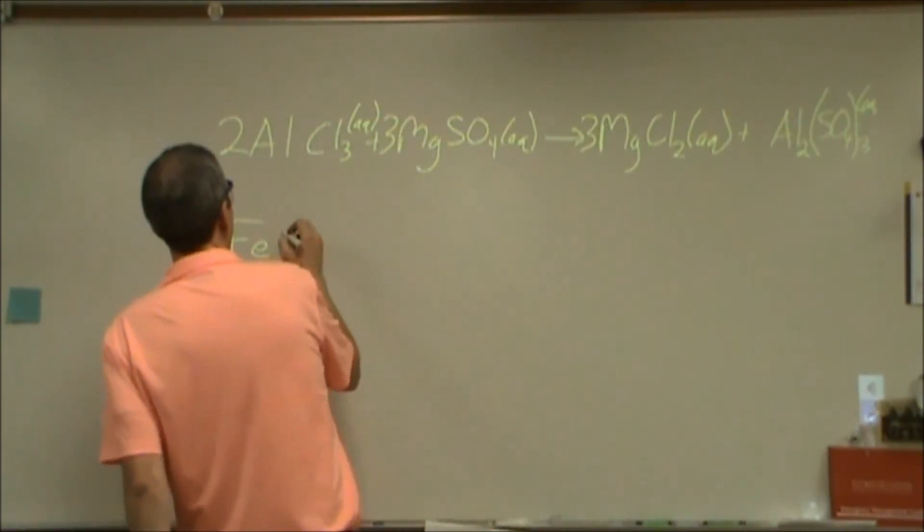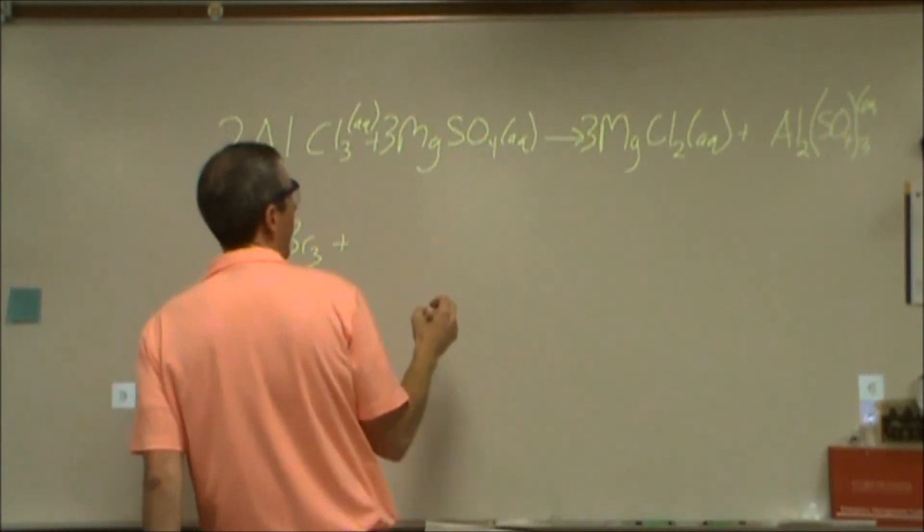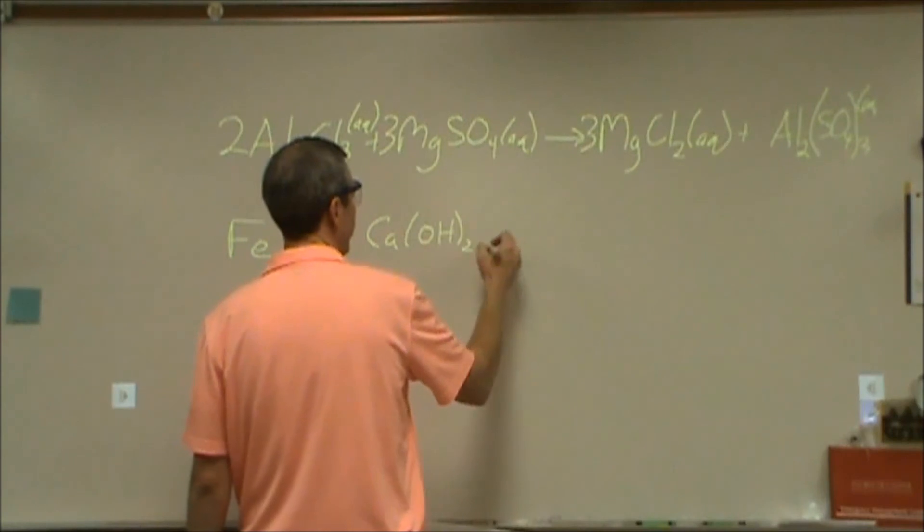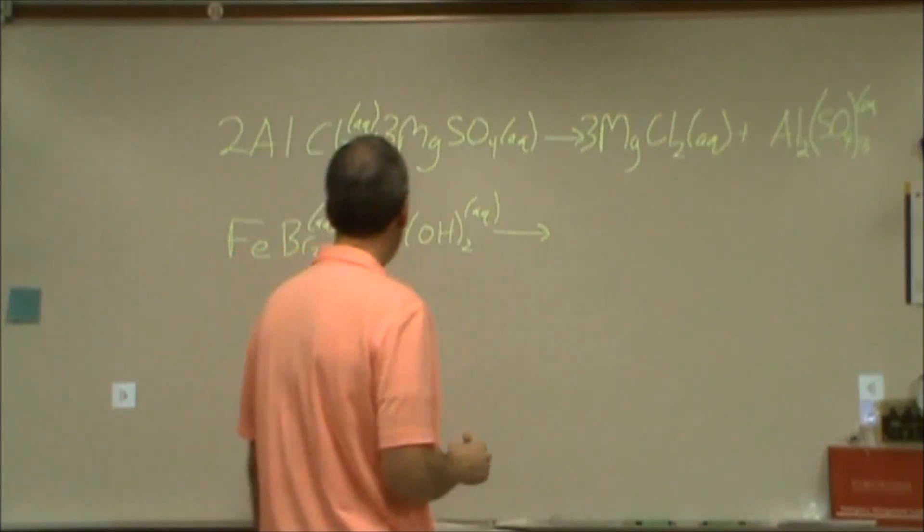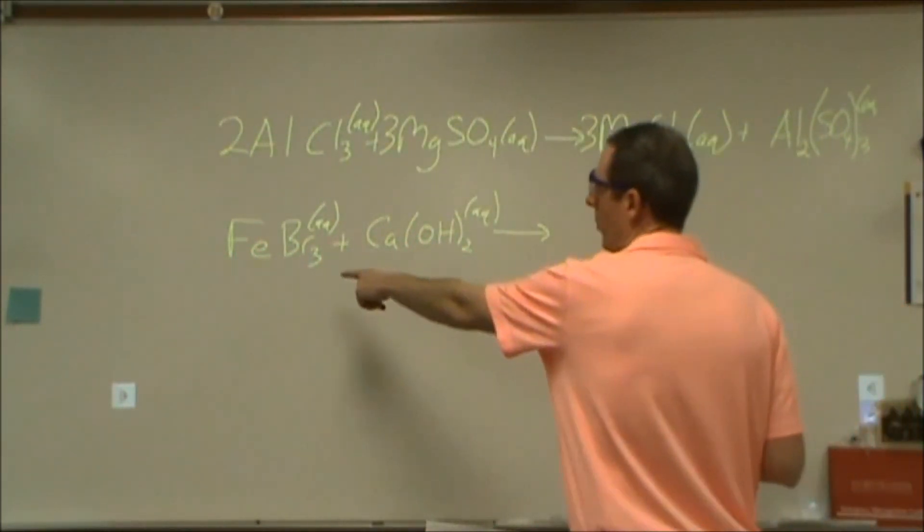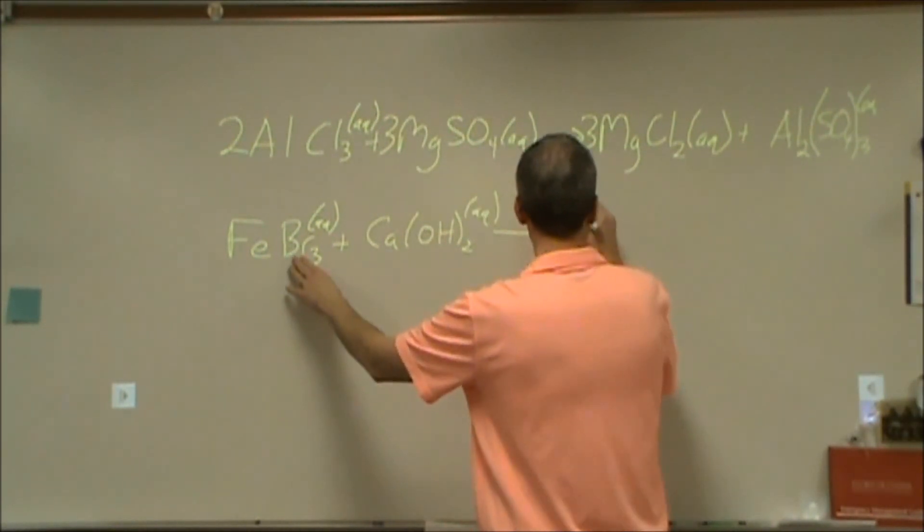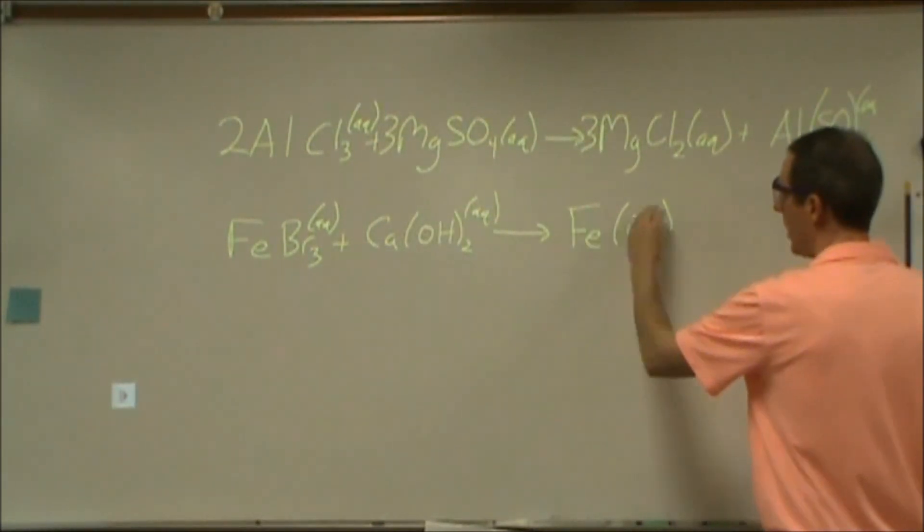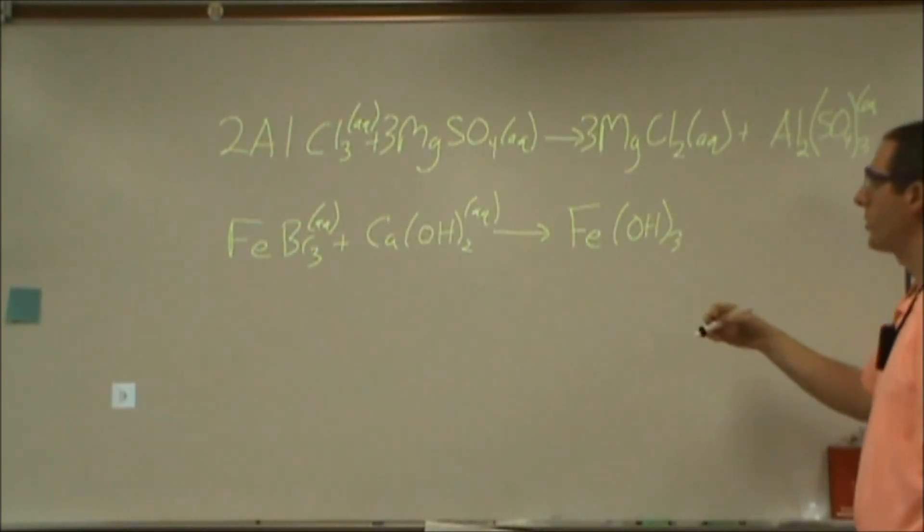Let's take iron three bromide. Let's react that with calcium hydroxide. Let's do aqueous for both to start. So, in this case, the iron here, we know that this is a plus three charge based on the fact that there are three bromides attached, each with a minus one charge. So, when I make my iron over here, that's still going to be three plus charge. So, since this is three plus charge and this is minus one charge, it's going to be Fe(OH)3 as the formula to give me that charge balance.